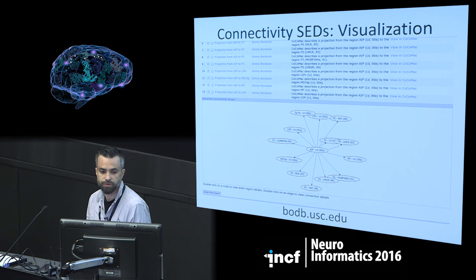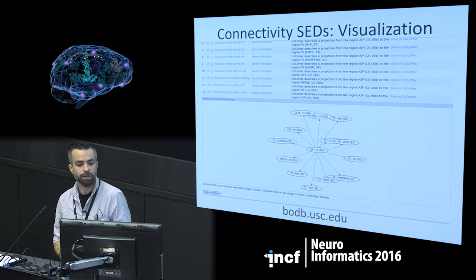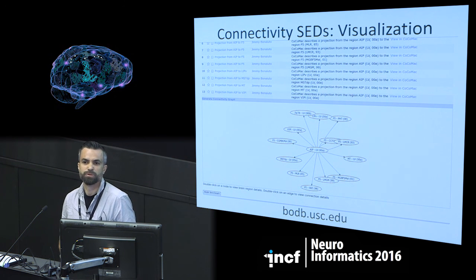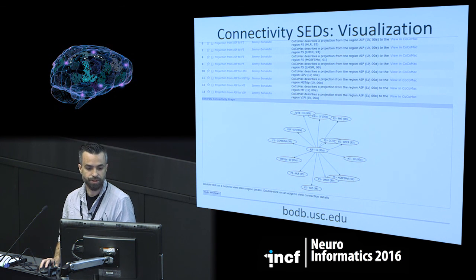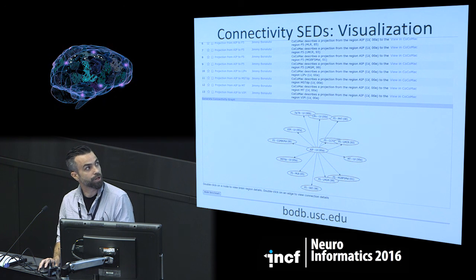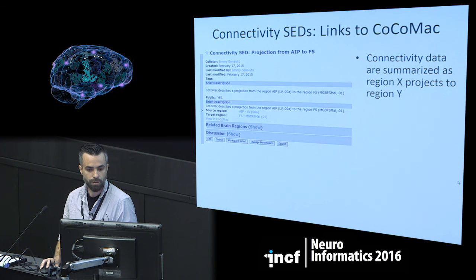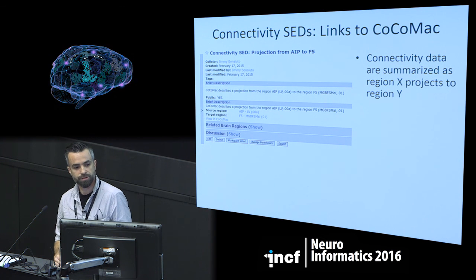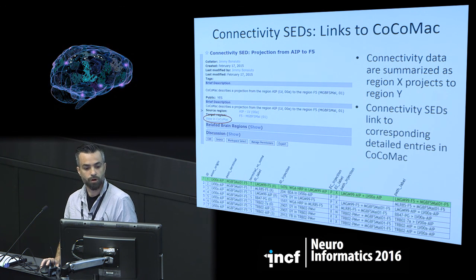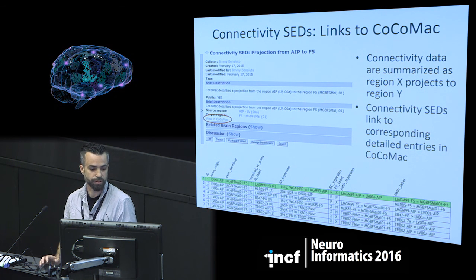Connectivity data is summarized in BodeB at a very high level in terms of region X projects to region Y. We can use this information to generate interactive graphs of connectivity in different parts of the brain. This one is showing for AIP all the regions, at least in the COCOMAC database, that it projects to. You can get a nice page summarizing this, along with a link to COCOMAC to view more detailed data about this connection.